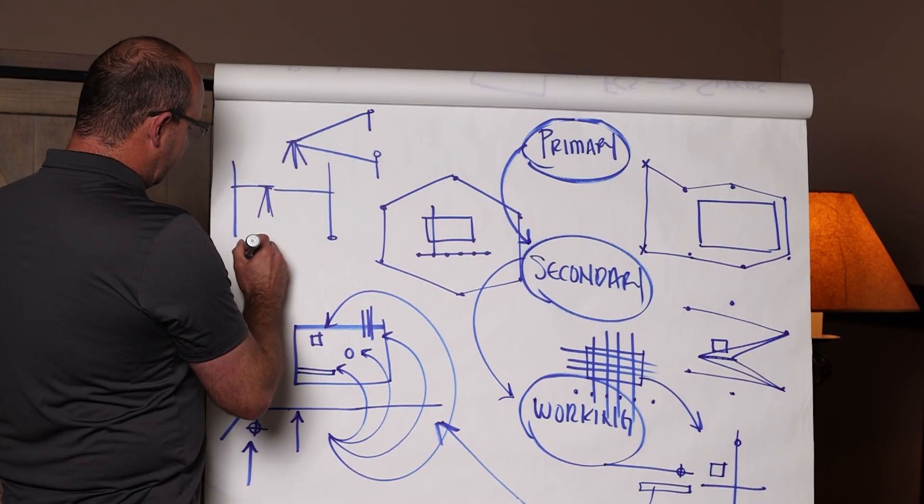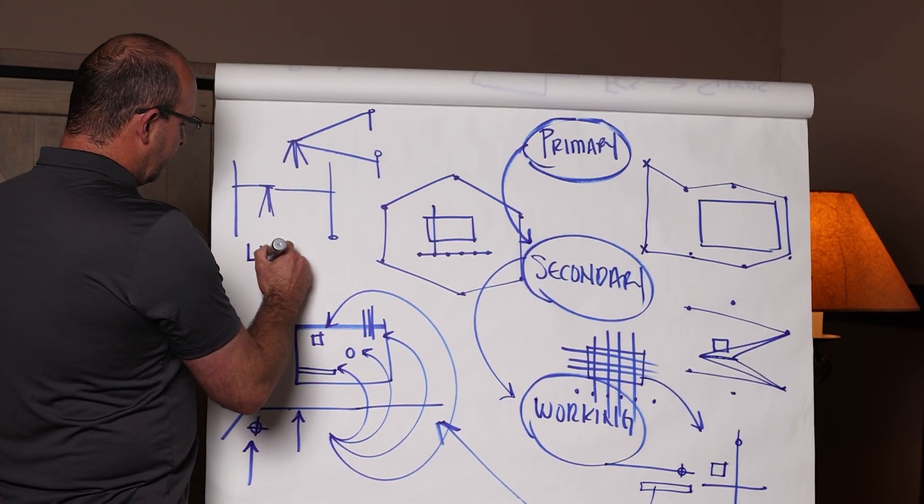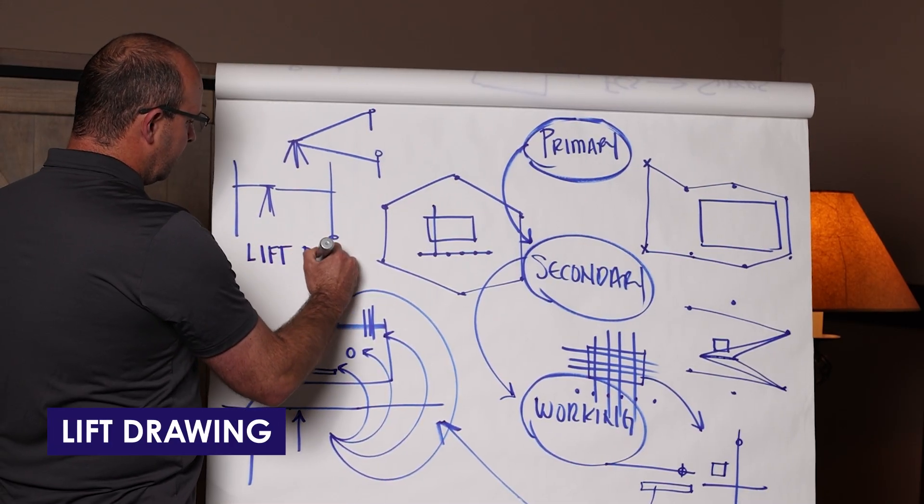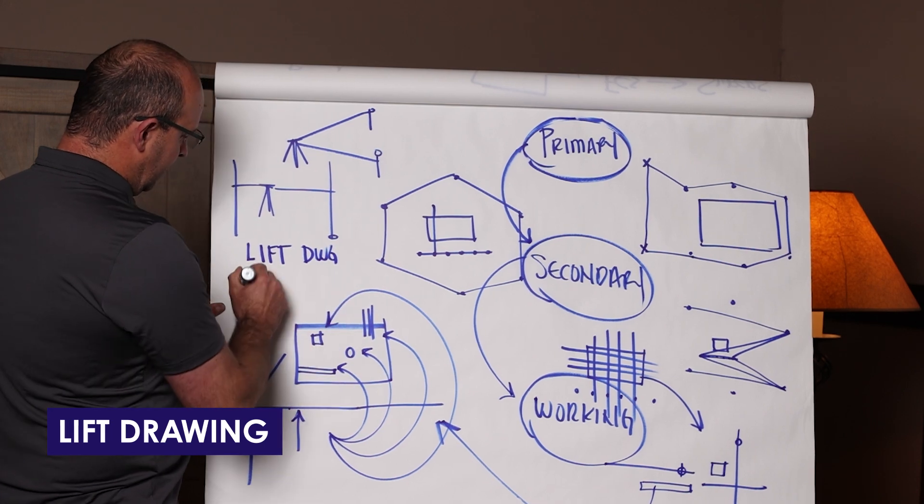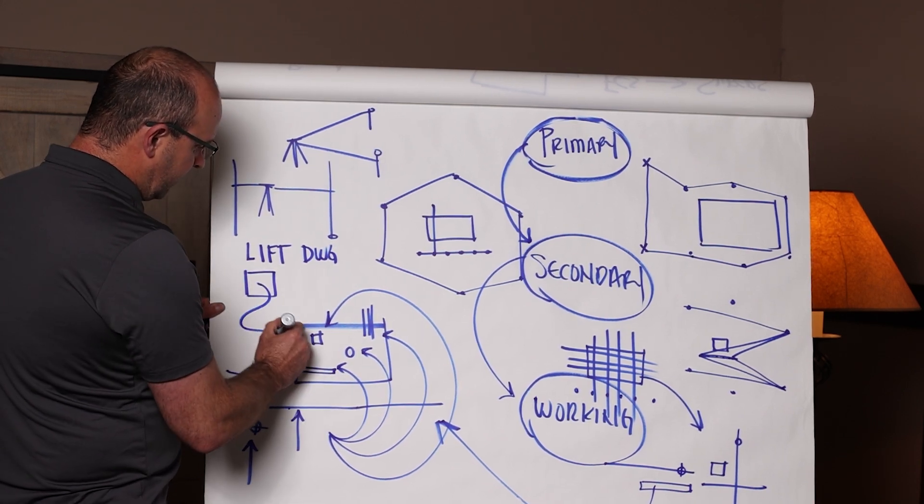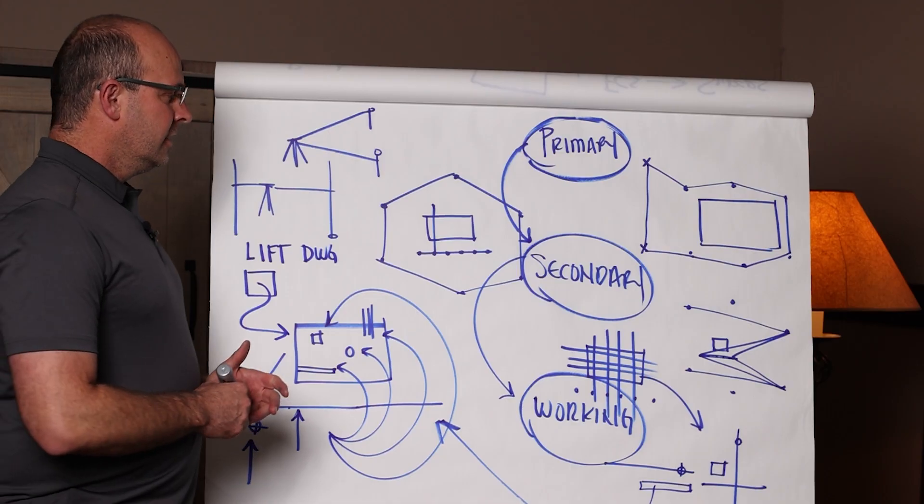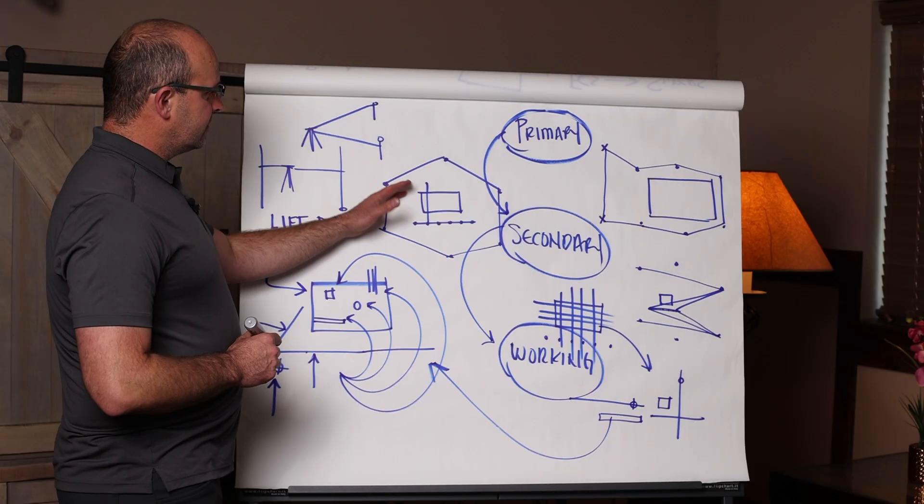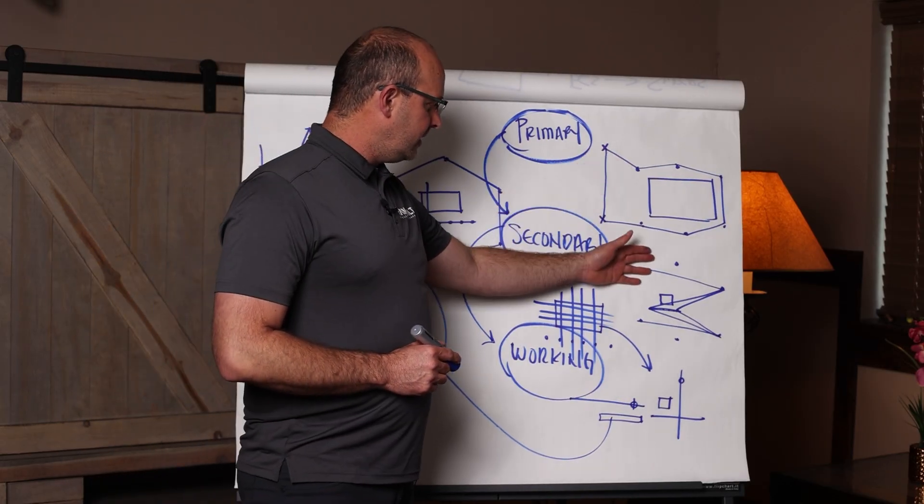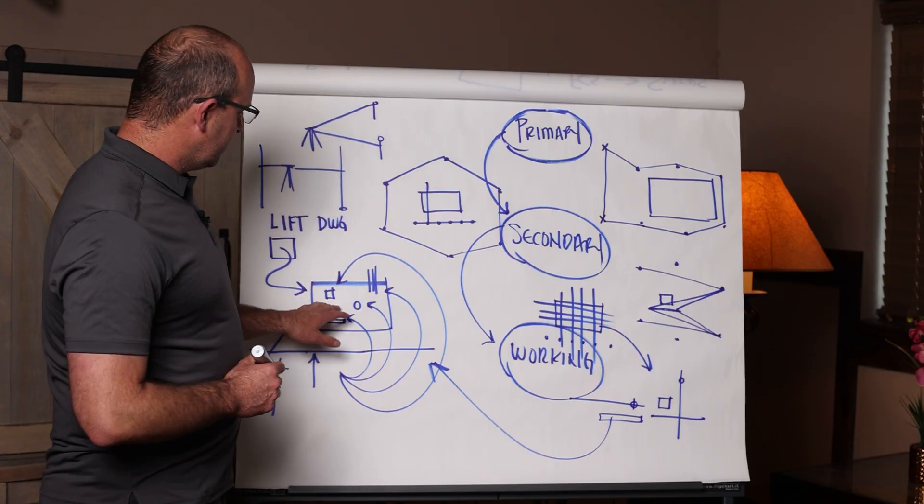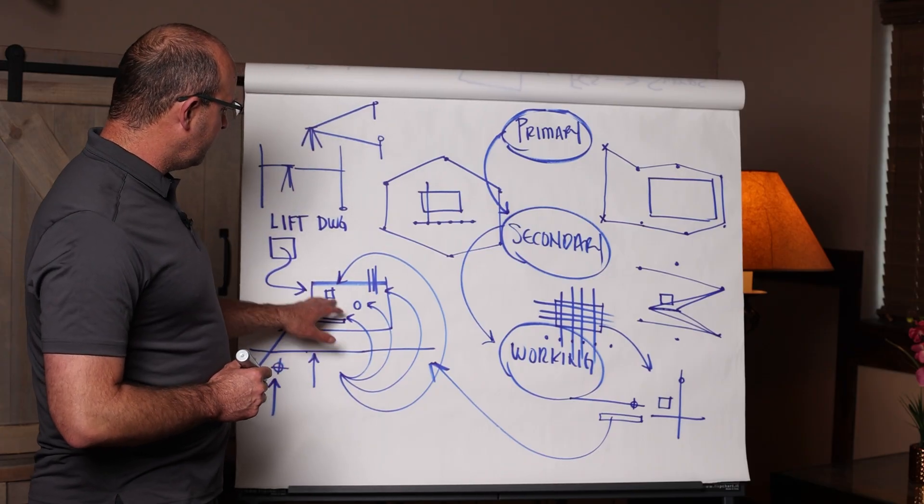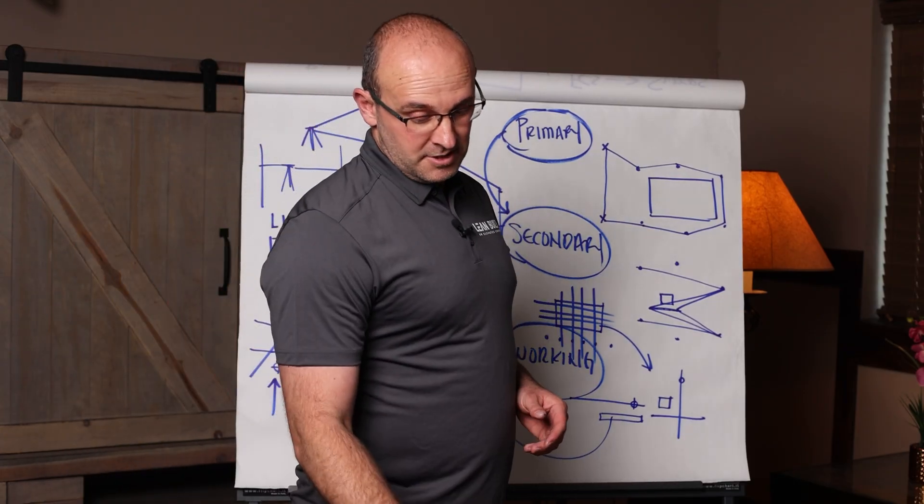And I covered in a different video in this series, if the field engineer has a lift drawing which shows the location of these in a lift drawing format then you have the information to actually do the layout. So a field engineer uses survey and control to go from primary to secondary to working control so that they can QC the building components from lift drawings to get things in the right spot.